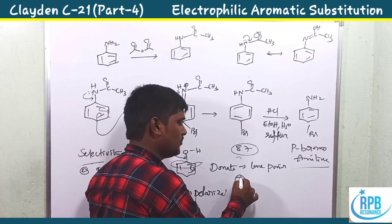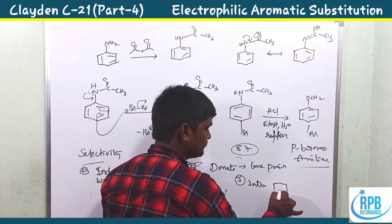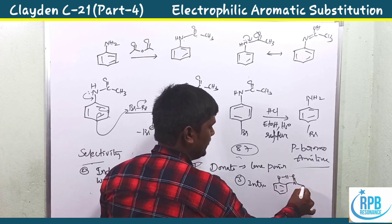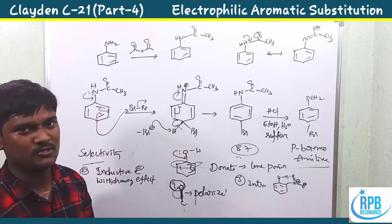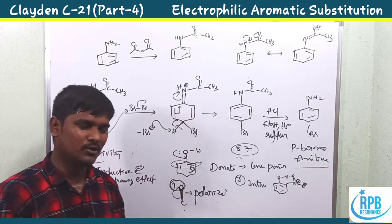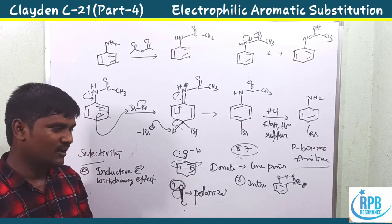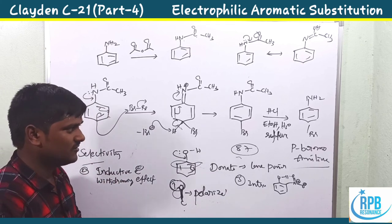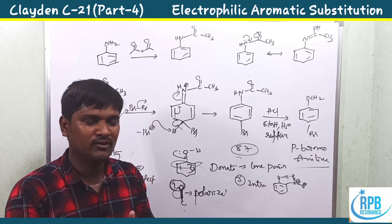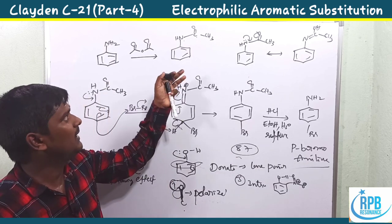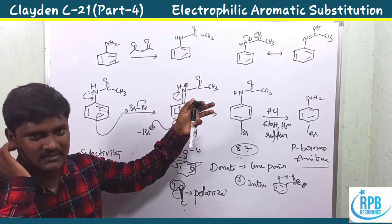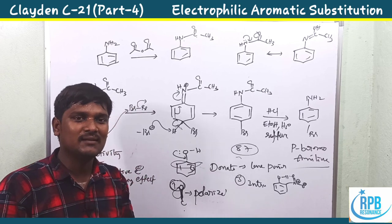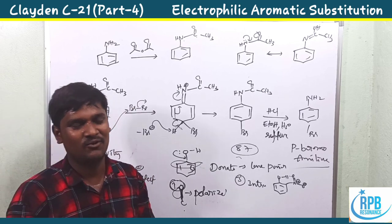The third selectivity factor is intramolecular hydrogen bonding. In the case of phenol, intramolecular bonding slightly favors ortho as the major product, but the enhancement is not very significant. That covers the NH2 electrophilic substitution reactions for this chapter. In the next video, I will cover alkyl-substituted benzenes electrophilic substitution reactions. Thank you for watching.